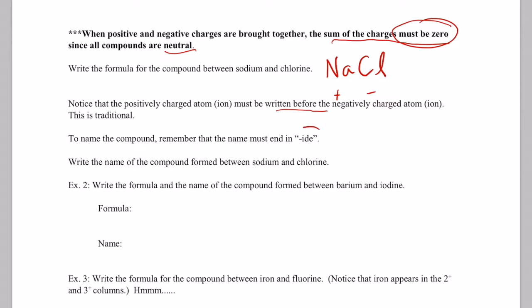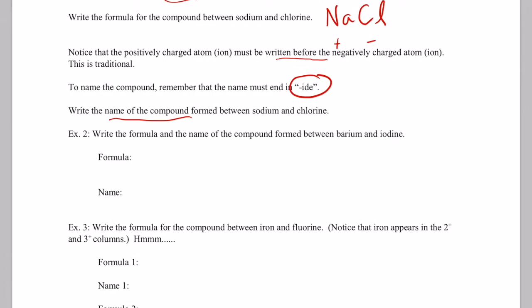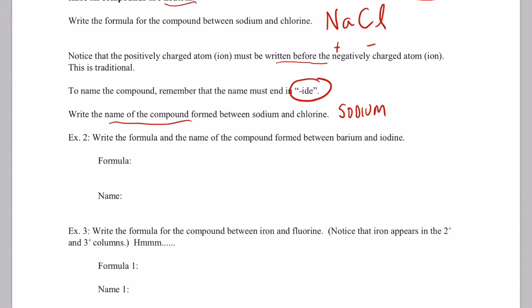Notice that the positively charged ion or atom is written before the negatively charged ion or atom. And that's just simply traditional. So the positive one will come first, and of course that's followed by the negative one. Now to name this, remember they all have to end in -ide. So what would the name of the compound formed between sodium and chlorine be? Well, we would name the positive ion just with its element's name, sodium. And then since all of these binary compounds have to end with -ide, we're going to end the negative ion with -ide. So we'd say sodium chloride would be the name for that compound.